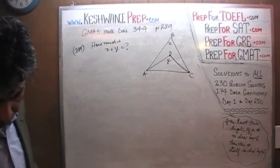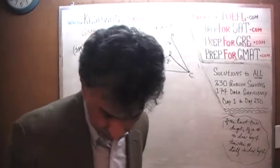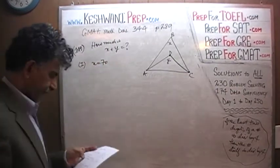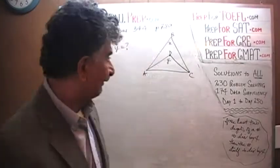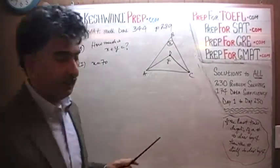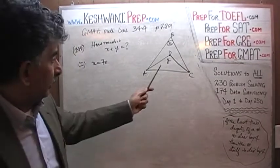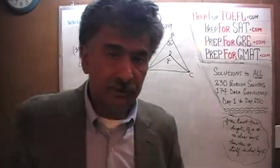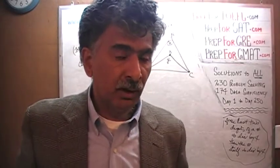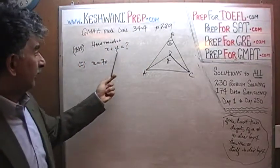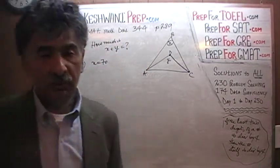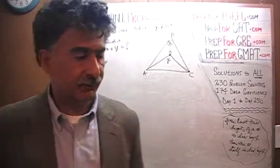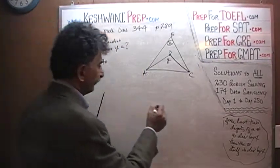Let's see what the first statement tells us. In the first statement, they tell us that x equals 70. Simply knowing that x equals 70, is there any way that information will help us figure out the value of y? The answer is no. Simply knowing x equals 70 does not help us at all in figuring out what y is, and until we know y, we cannot answer what their sum is. The first statement by itself is clearly not sufficient.